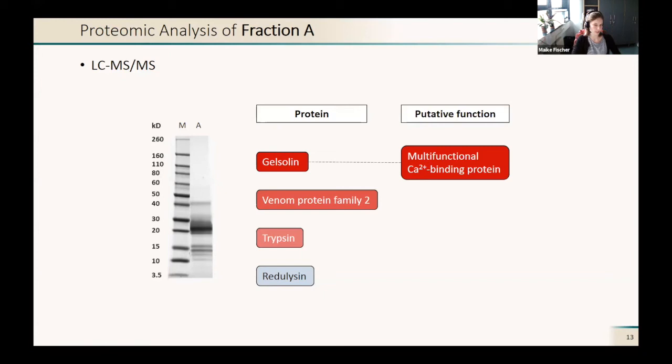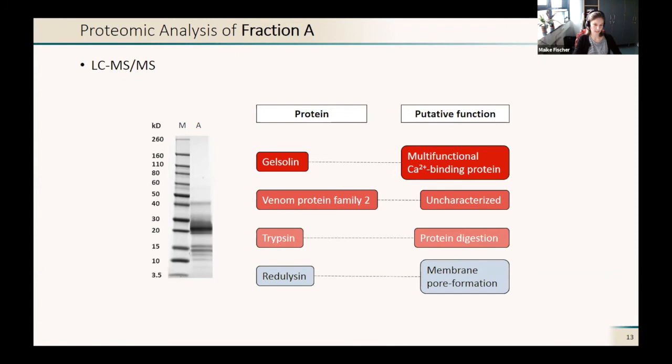Gelsolin is actually a multifunctional calcium binding protein which is often found in venoms, but the role of this gelsolin is not quite clear. It is suggested that it might play a role in actin depolymerization, but we don't really know. The venom protein family 2 proteins are uncharacterized, so we don't know anything about them. Trypsins are mainly there for protein digestion or regulation of other proteins. And the redilysins are putative membrane pore-forming proteins that have been found in other heteropteran species too.